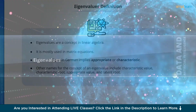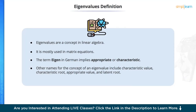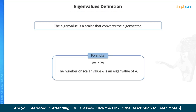Eigenvalues — Definition. Eigenvalues are a concept in linear algebra, mostly used in matrix equations. The term 'eigen' in German implies 'appropriate' or 'characteristic.' Other names for the concept of an eigenvalue include characteristic value, characteristic root, appropriate value, or latent root. Eigenvalues are the special set of scalars associated with the system of linear equations. In simple words, the eigenvalue is a scalar that is used to transform the eigenvector.